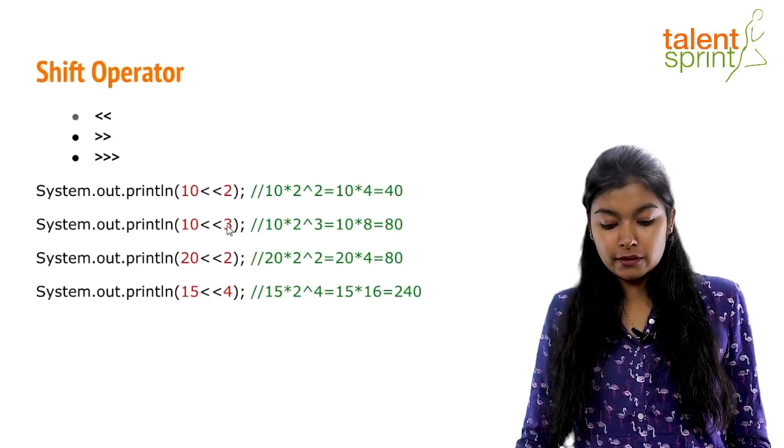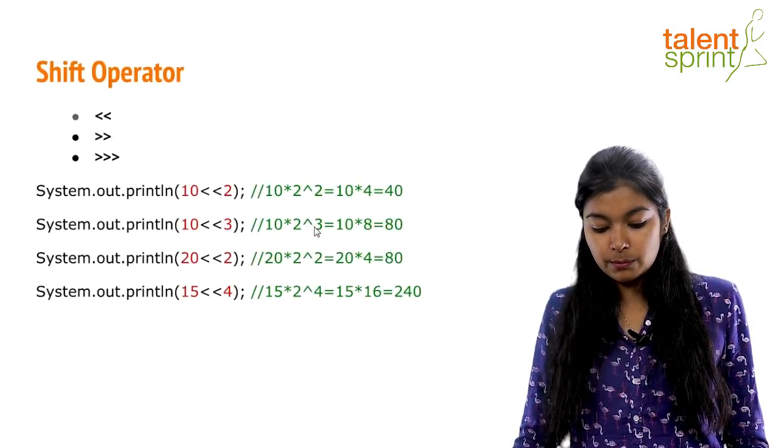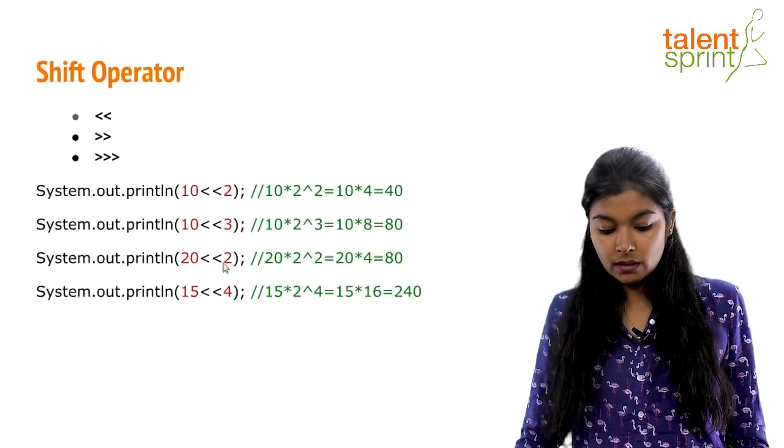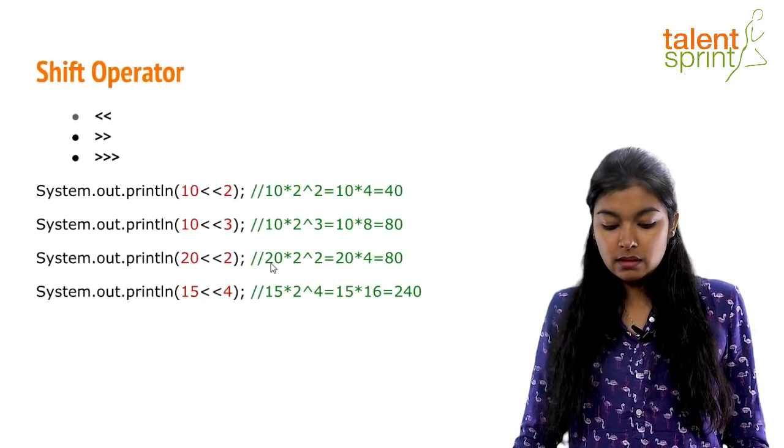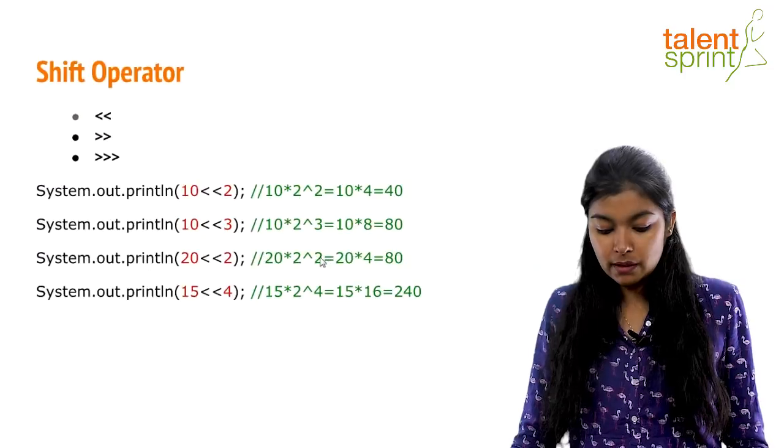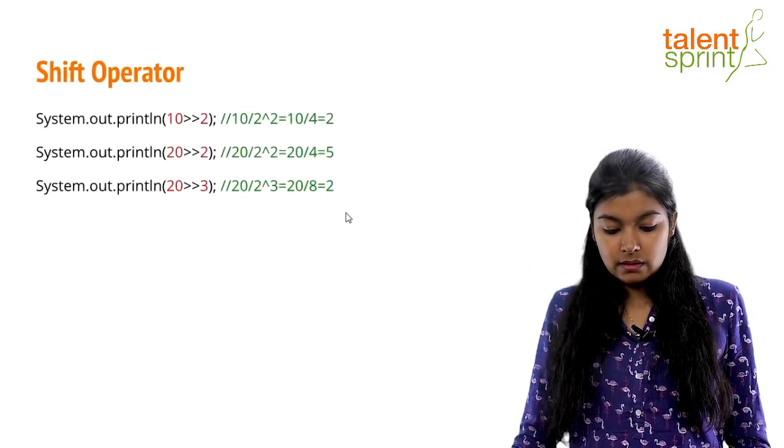Similarly, when you do a left shift of 3, you are doing 2 to the power 3. When you do a left shift of 2 again on 20, you are multiplying 20 by 2 to the power of 2 and so on.